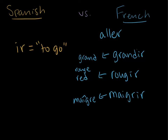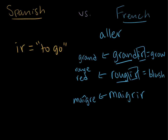Since IR means 'to go' and all these Romance languages are related, 'grandir' literally means 'to go big', so it means to grow. 'Rougir' means 'to go red', which means to blush. And 'maigrir' means 'to go skinny', which means to lose weight or slim down. This is a really interesting pattern that you wouldn't notice if you didn't realize that IR meant 'to go'.